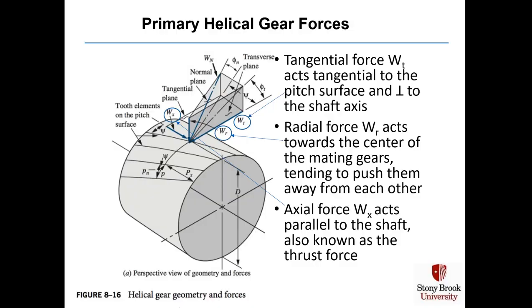This slide shows the direction of the primary helical gear forces. Tangential force W sub T acts tangential to the pitch surface and perpendicular to the shaft axis. Radial force W sub R acts towards the center of the mating gears, tending to push them away from each other. An axial force W sub X acts parallel to the shaft and is also known as the thrust force, which must be supported by a thrust bearing.